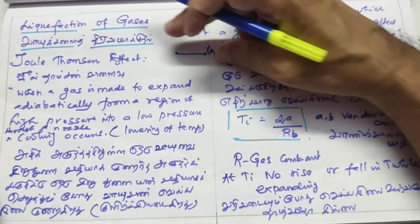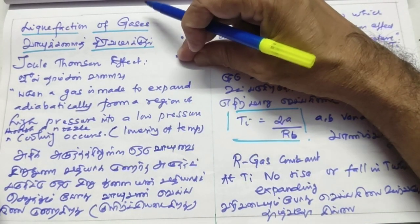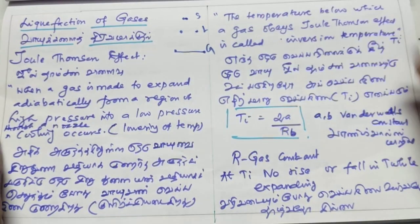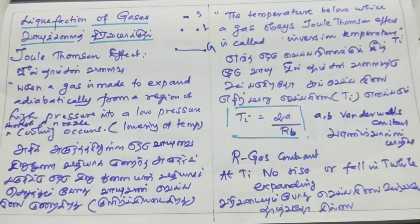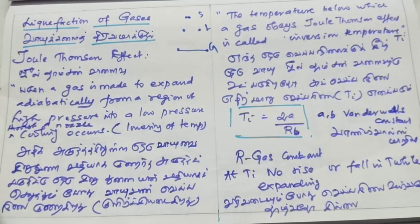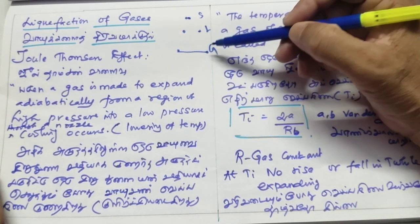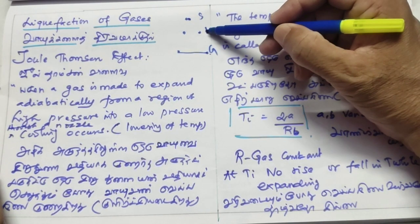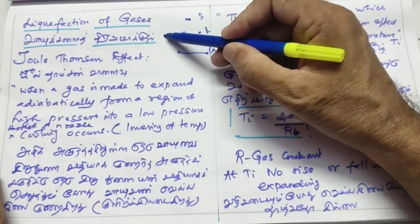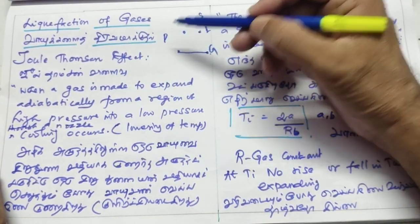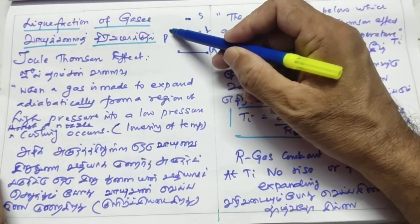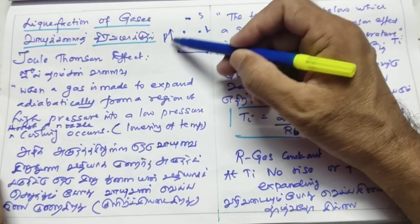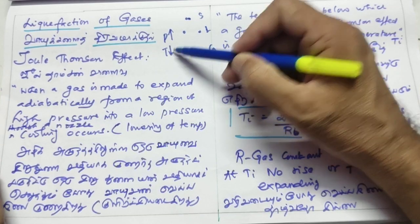When we are increasing the pressure, the molecules will come close together. When the molecules are very close together, the gas becomes liquid. To achieve this, we increase the pressure while keeping the temperature constant.